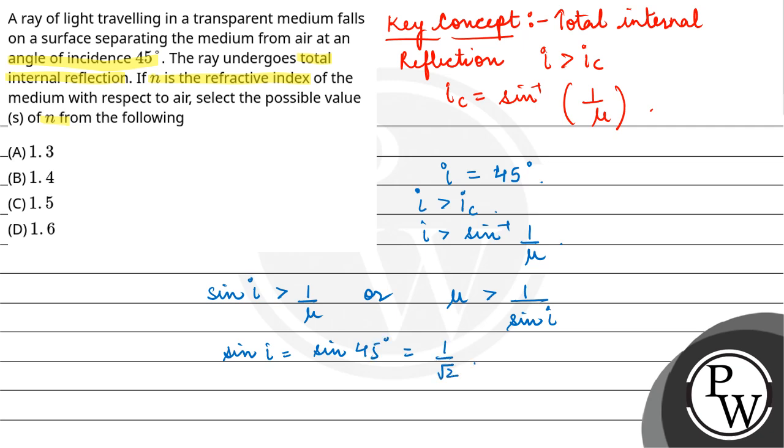That means mu must be greater than under root 2. Under root 2 is 1.414, so that means your value must be greater than 1.4.